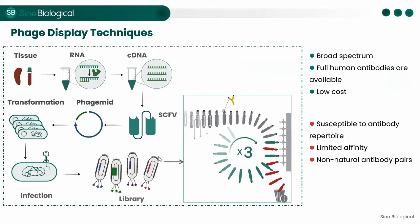The second generation of antibody development uses phage display, another commonly used antibody screening technology. In this technique, antibody gene fragments are cloned in vitro and inserted into the structural gene of phage coat proteins. Antibodies are then displayed on the surface of the phage via expression of fusion proteins — a step called phage library construction. Antigens are then used to screen the phage library for specific monoclonal antibodies, a step known as biopanning.